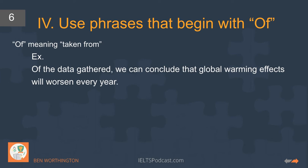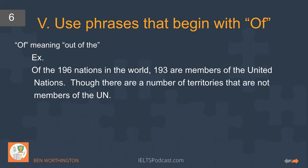We can also use two types of phrases that begin with 'of'. The first is 'taken from': 'Of the data gathered, we can conclude that global warming effects will worsen every year' — so 'taken from the data gathered.' The second way to use 'of' means 'out of.'